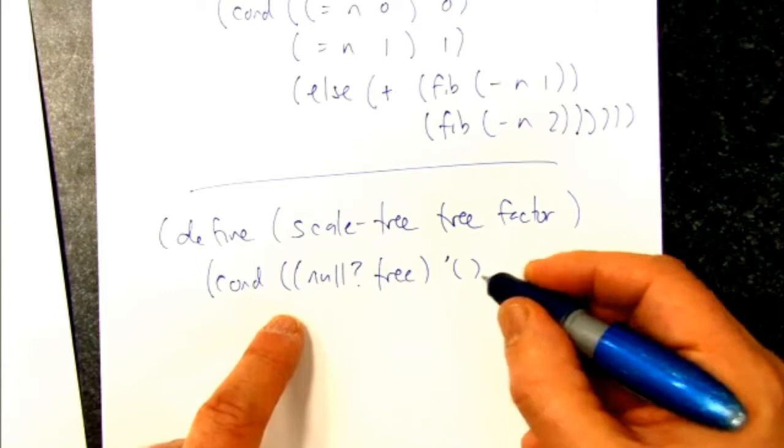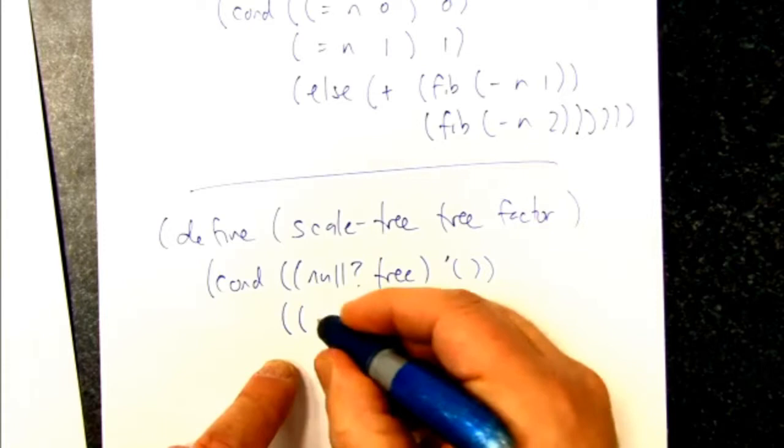I suppose we could say tree there, but that would be annoying. We're going to do the same trick here, saying if it's not a pair, then it must be a leaf.